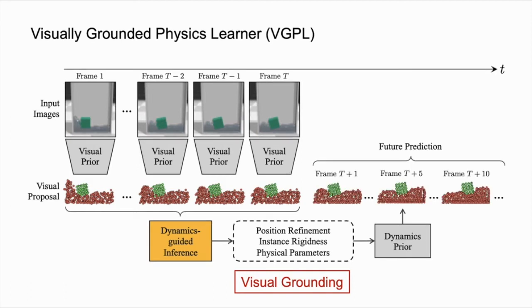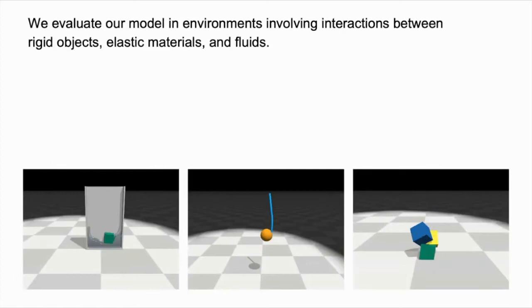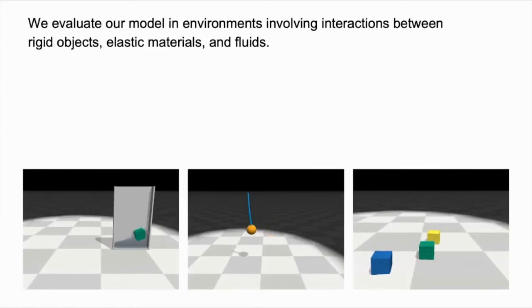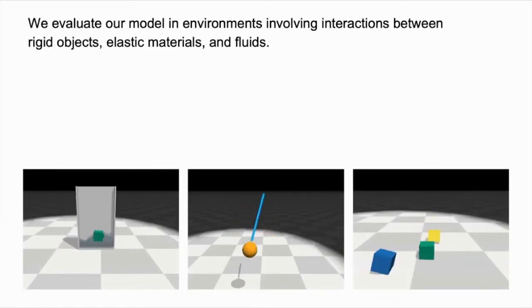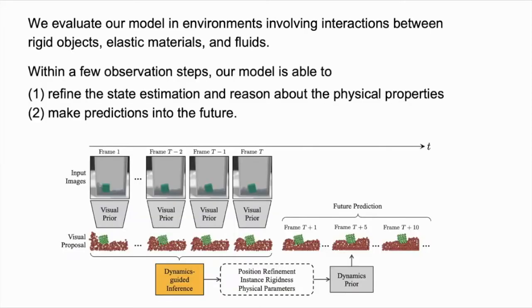The dynamics module takes in outputs from the inference module and predicts particle positions into the future. We evaluate our model in environments involving interactions between rigid objects, elastic materials, and fluids. Within a few observation steps, our model is able to perform dynamics-guided inference to refine the state estimation and reason about the physical properties, which allows us to make predictions into the future.